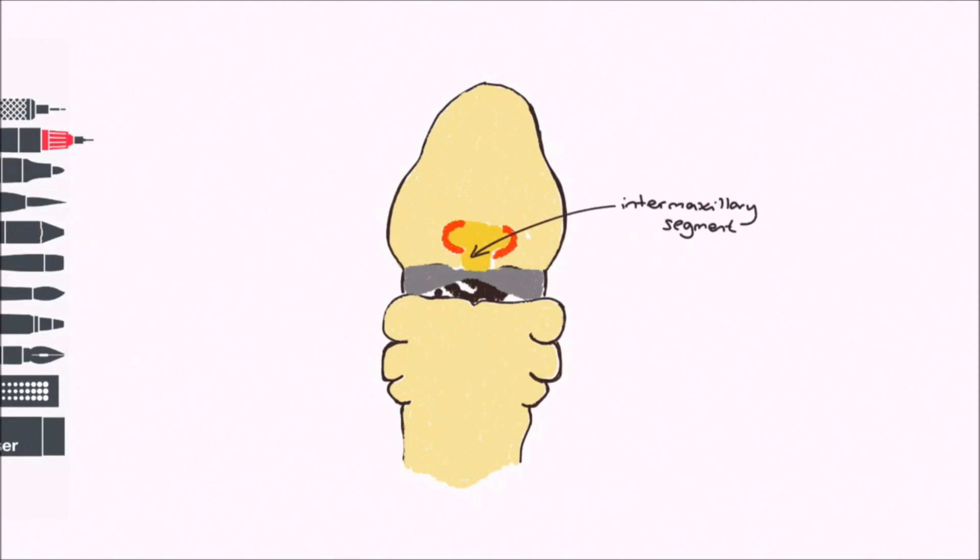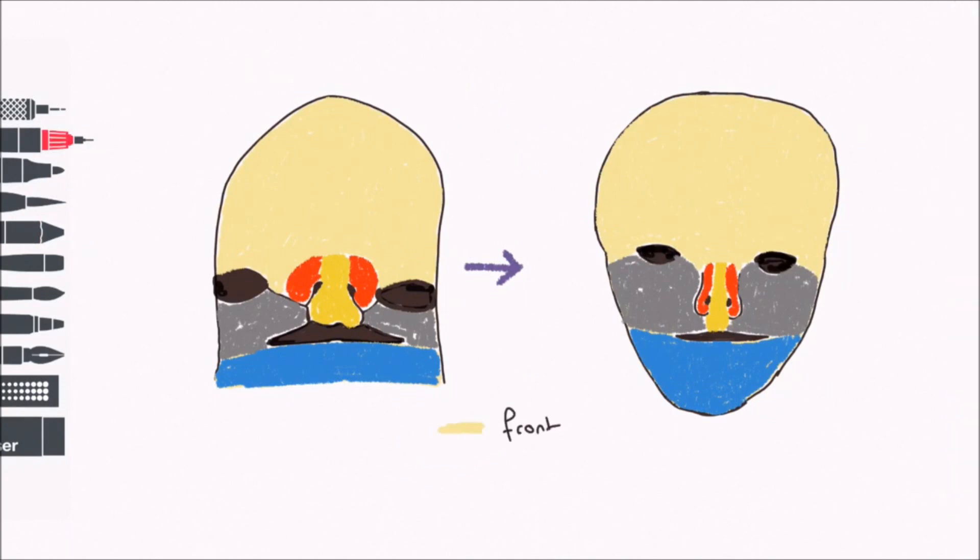As this occurs, the medial nasal prominences have also been elongating inferiorly, forming the middle of the nose and the philtrum of the lip. In this manner, the medial nasal prominences and the maxillary processes form the cheeks or maxilla and the upper lip. The lateral nasal prominences do not form the lip, just the outer bit of the nose and nostrils.